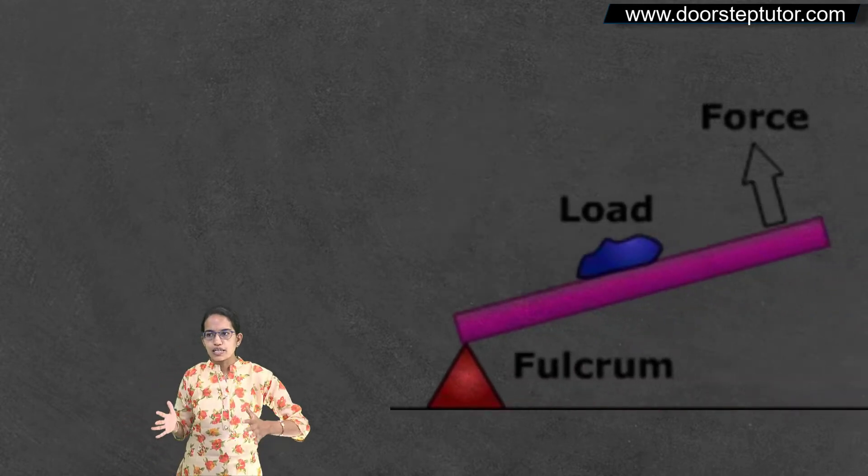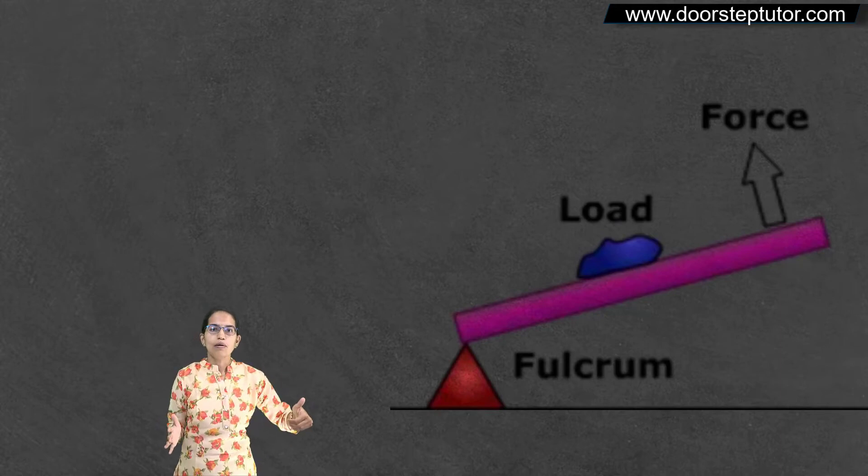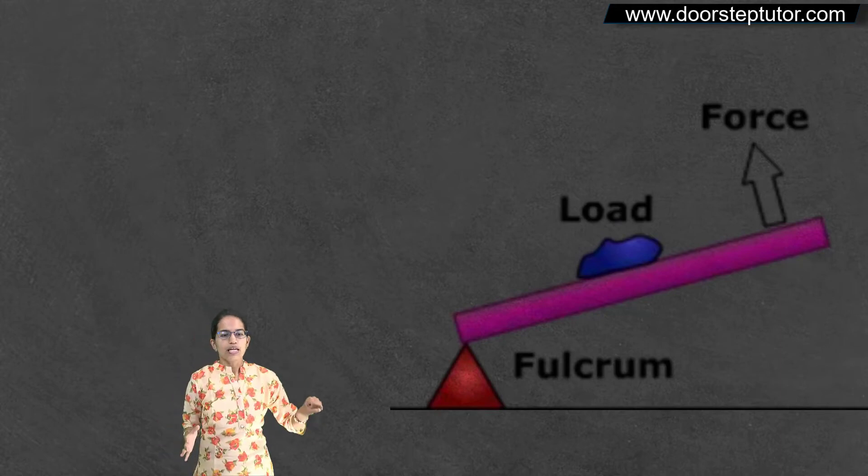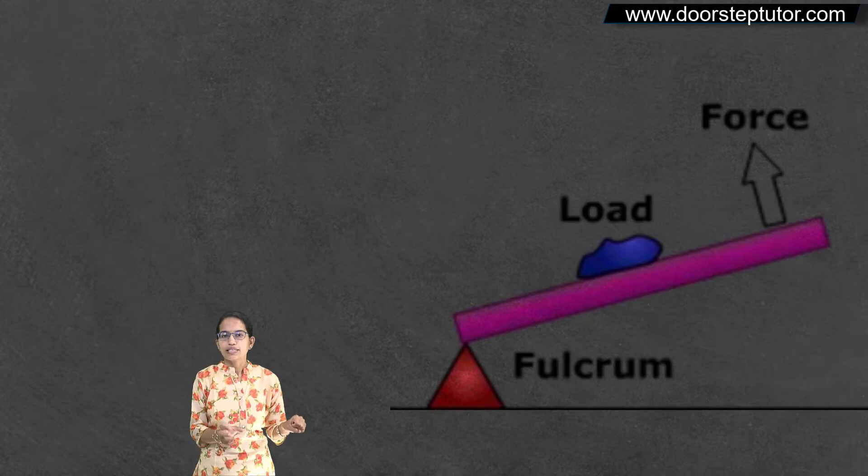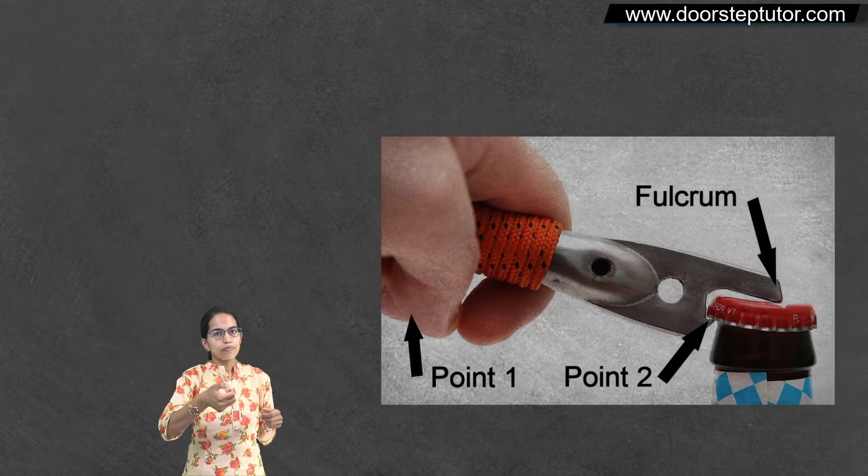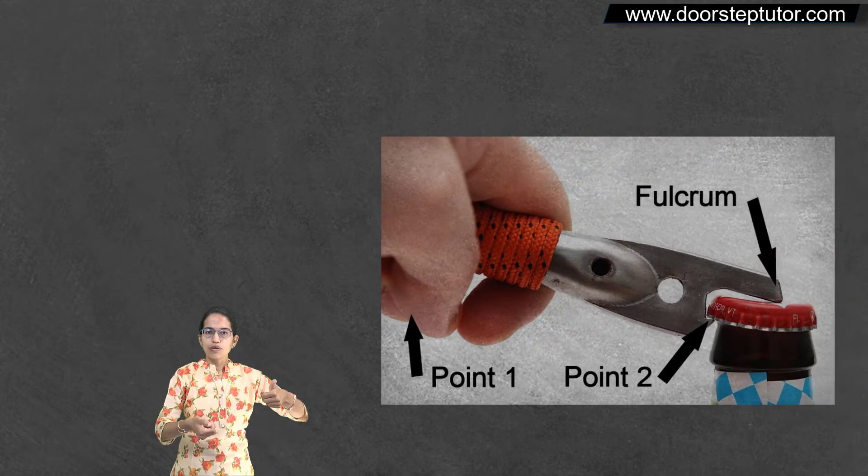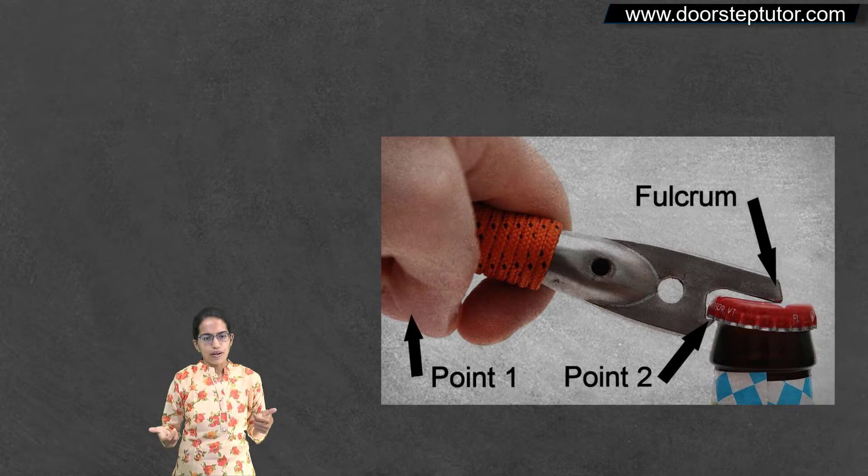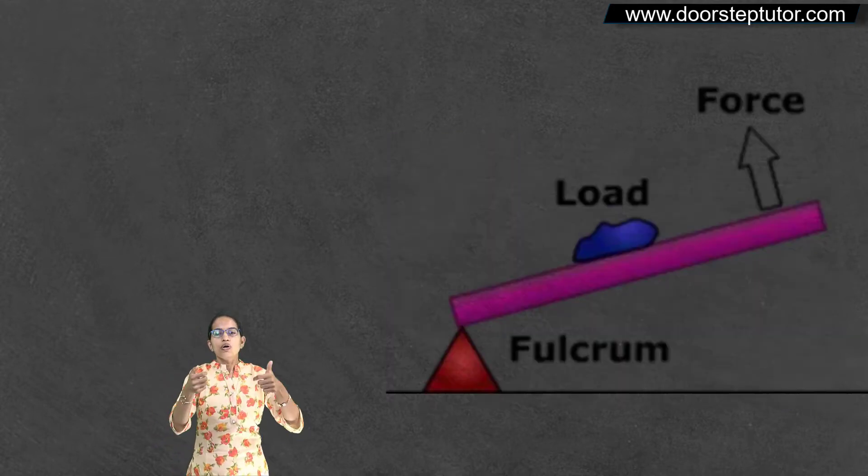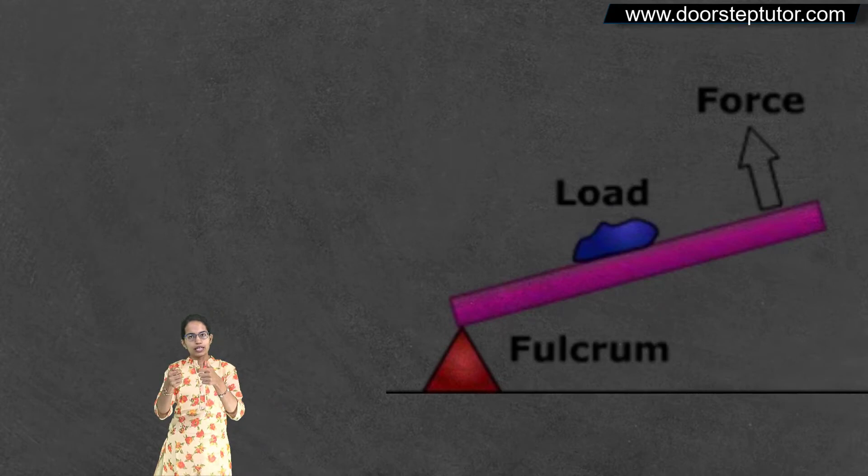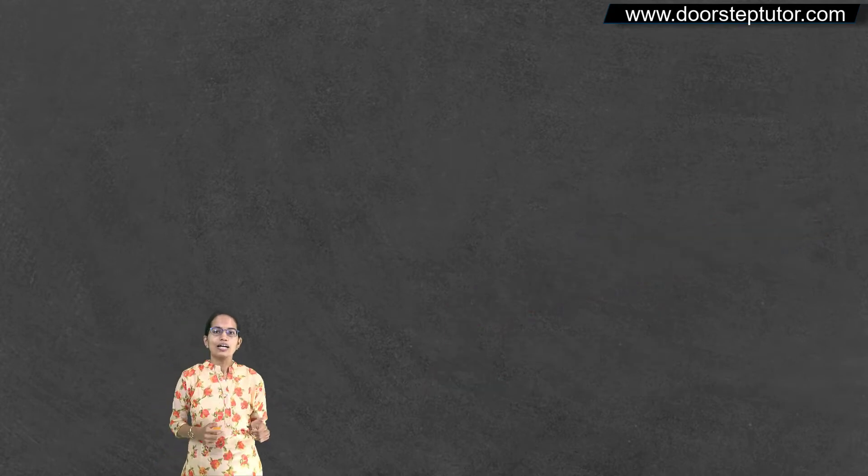Class 2 lever is a case where fulcrum is at one of the ends and load is in the center. In the case of bottle opener, the load would be in the center. The fulcrum would be on one of the ends and then you would have effort that would be applied from the other end. So the load is situated in the center in case of class 2 lever.